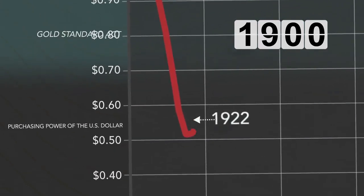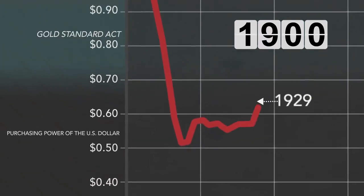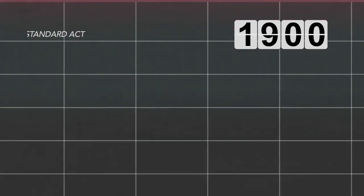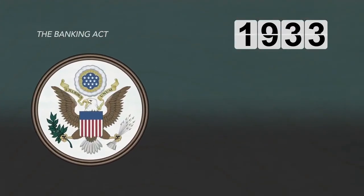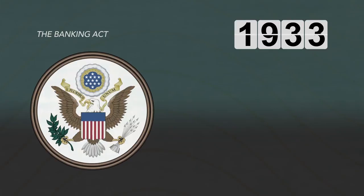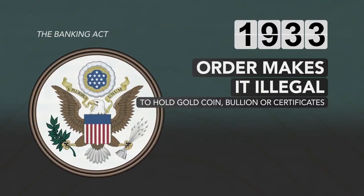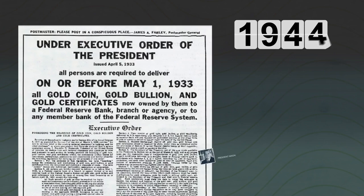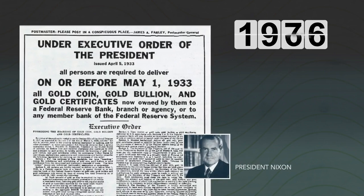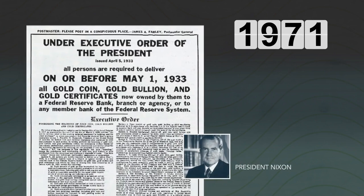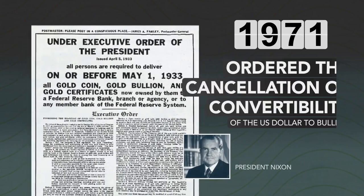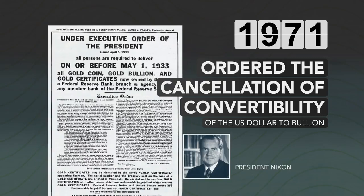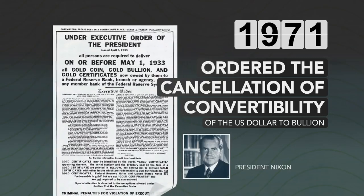However, as the price of gold rose, the gold standard for the dollar became increasingly difficult to manage. The Banking Act of 1933 revoked the promise to pay the bearer on demand the face value of currency in gold, and in 1971, Richard Nixon, the then president, unilaterally decided to order the cancellation of convertibility of the U.S. dollar to bullion.